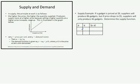So let's go ahead and fill in our table. We're saying that if the unit price is $9, suppliers will produce 86 gadgets. That's our quantity: 9 comma 86.